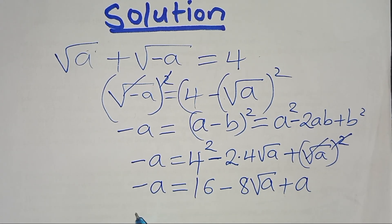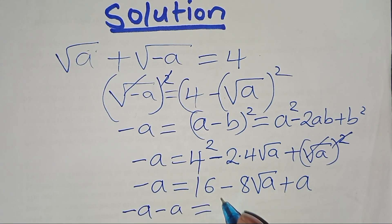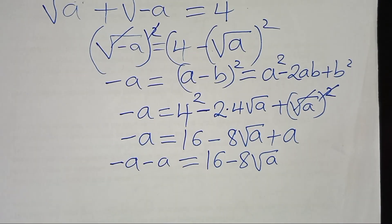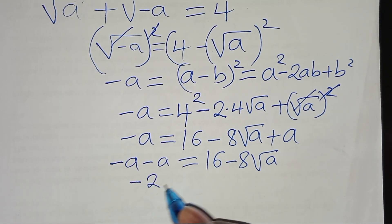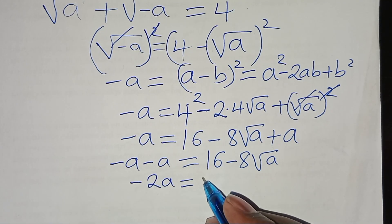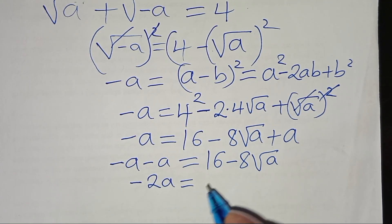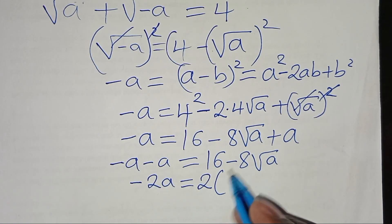Taking positive a to the left-hand side: −a − a = 16 − 8√a, which gives −2a = 16 − 8√a. We can factor the right side as 2(8 − 4√a).